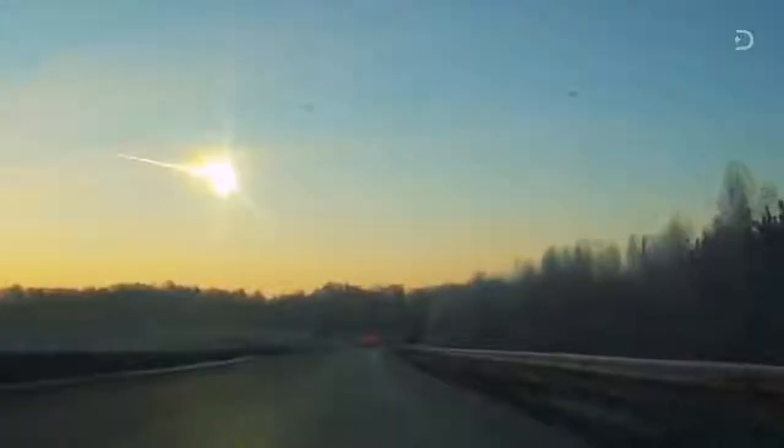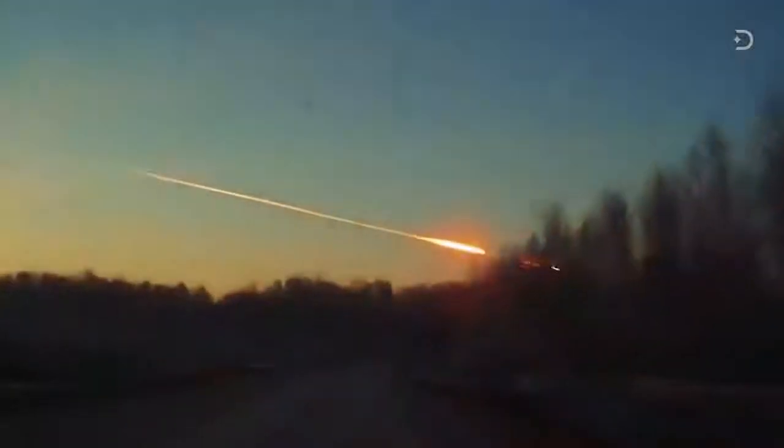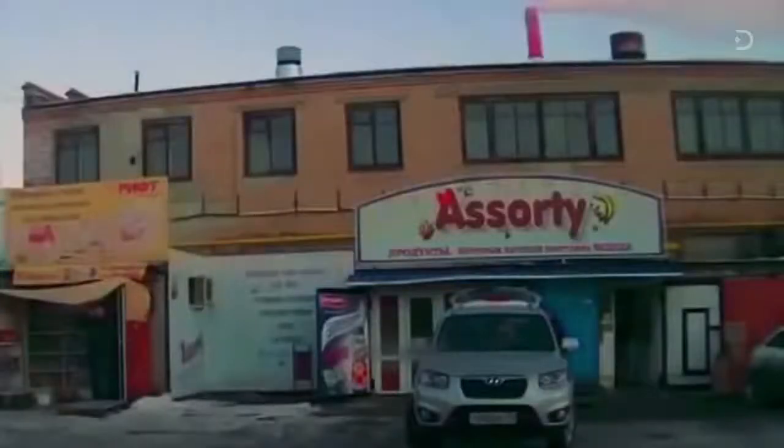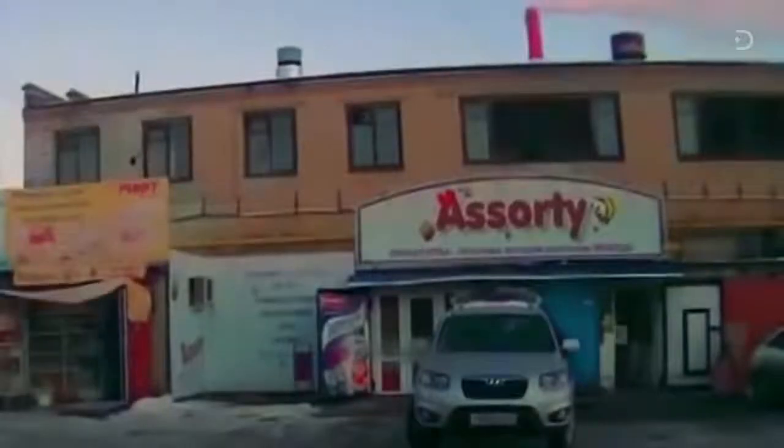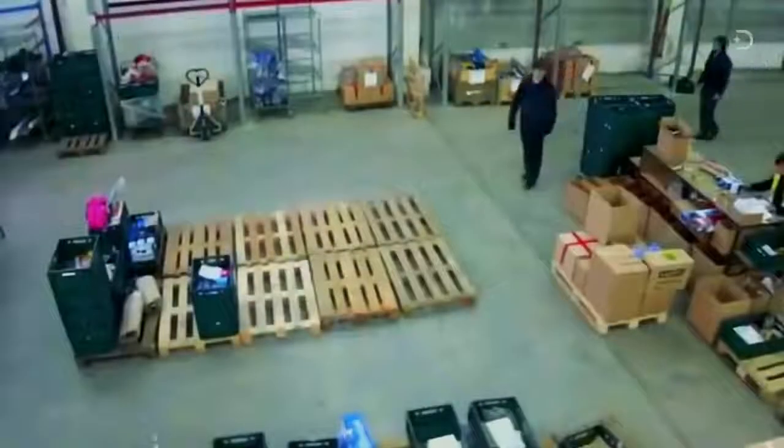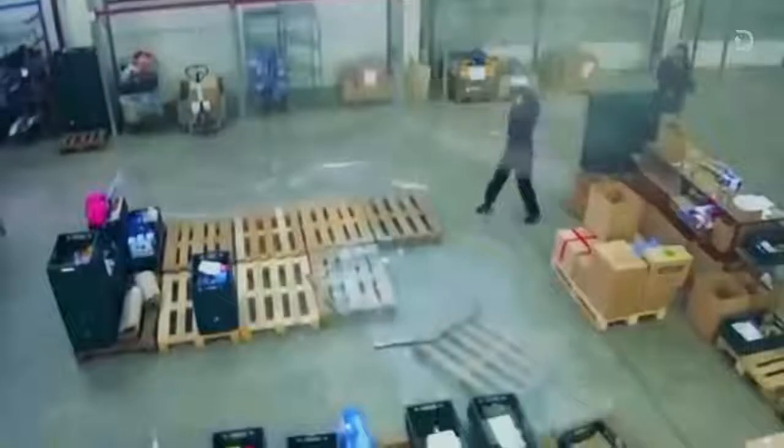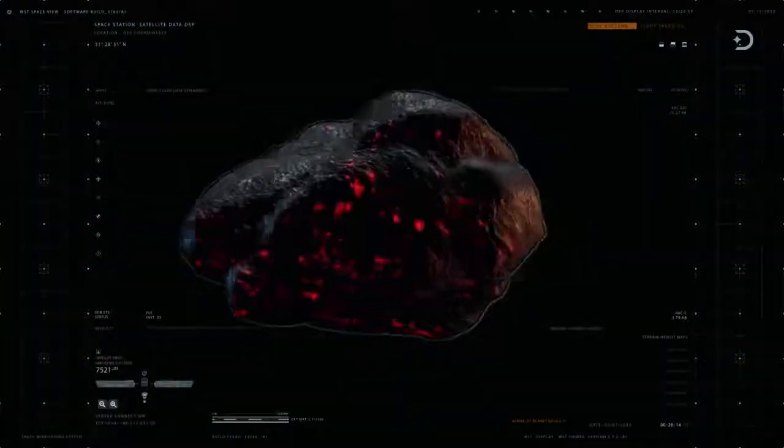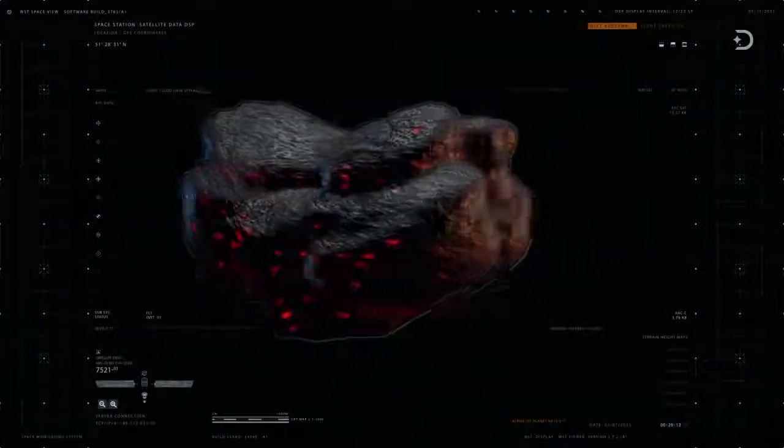The explosion of the meteor, which occurred above the city of Chelyabinsk, helped bring the asteroid threat into a new realm of reality. The Chelyabinsk meteor caused damage to over 7,200 buildings and injured around 1,500 people. And it was only 20 meters, or 65 feet, in diameter.